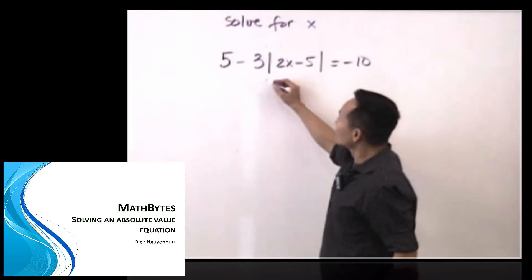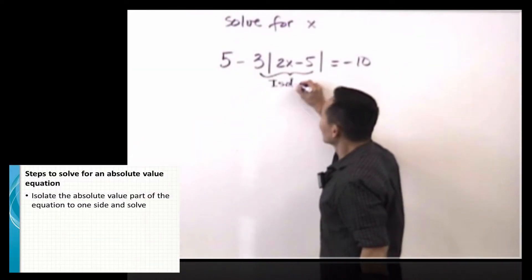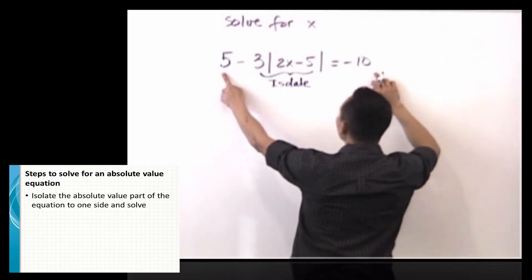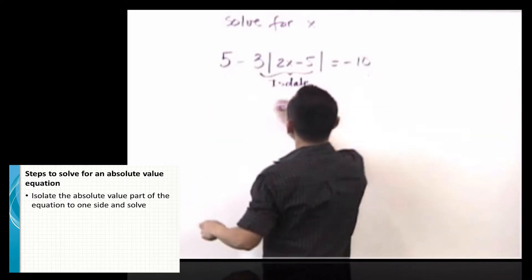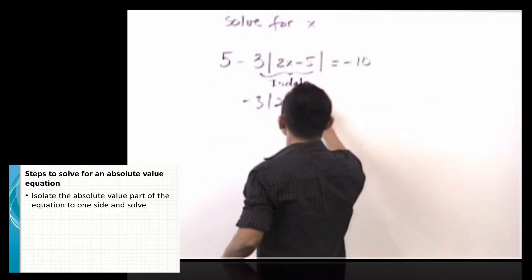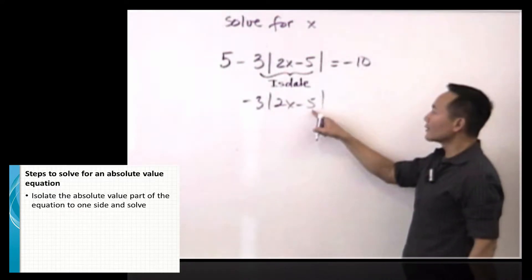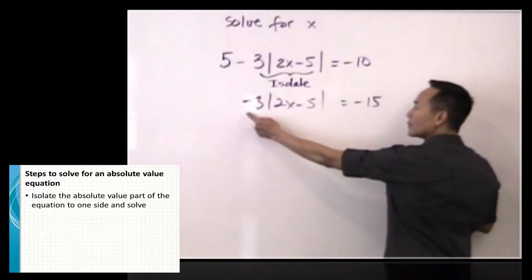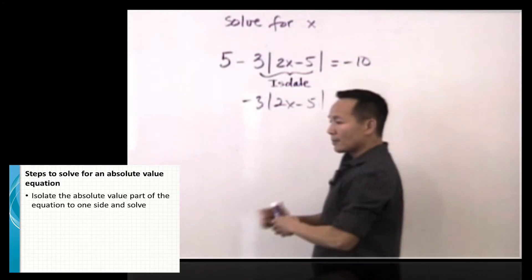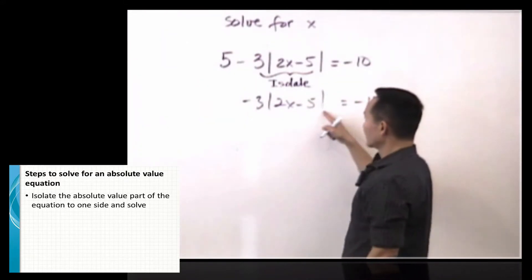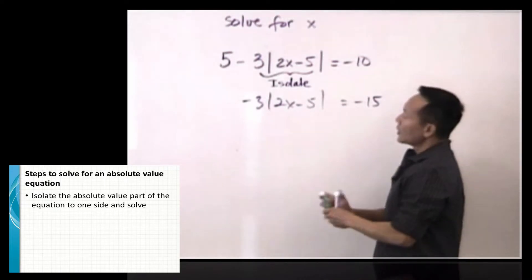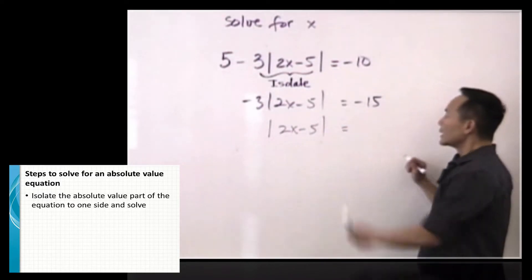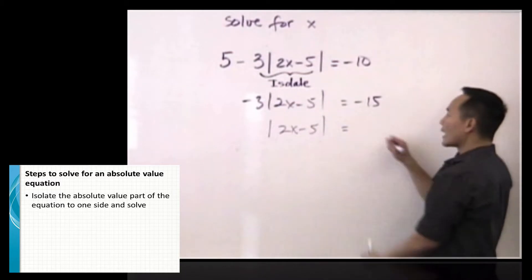In this case, I want to isolate the absolute value quantity. So I subtract 5 from both sides. I have negative 3 times the absolute value of 2x minus 5 equals negative 15. Then we clean up the negative coefficient by dividing both sides by negative 3. I have the absolute value of 2x minus 5 left, and negative 15 divided by negative 3 gives 5.